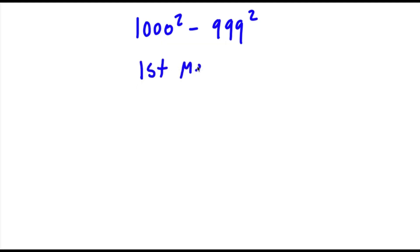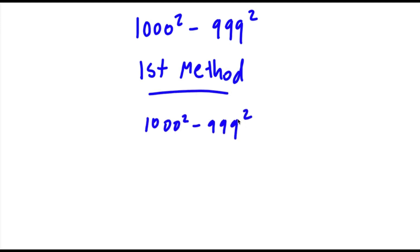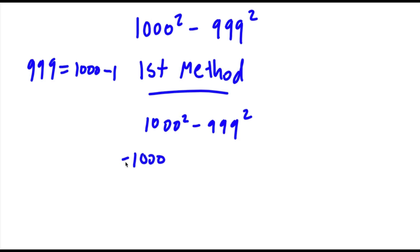So the first method: we start with 1000 squared minus 999 squared, and then 999 is the same thing as 1000 minus 1. So now I'm going to replace 999 with 1000 minus 1. So now I have 1000 squared minus (1000 minus 1) squared.